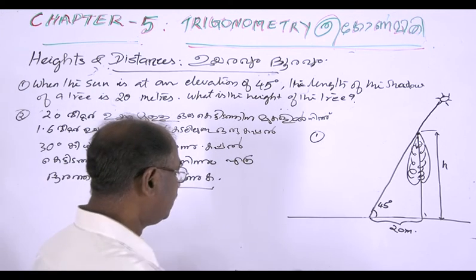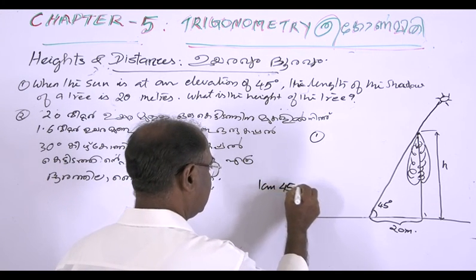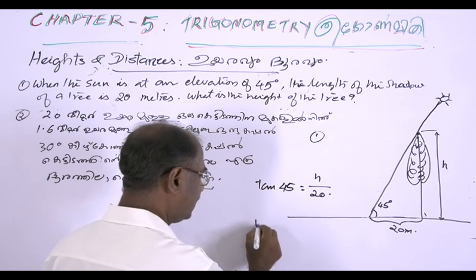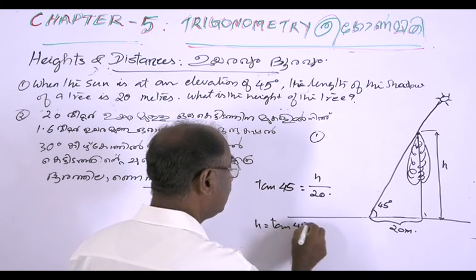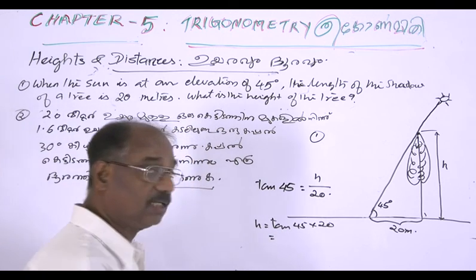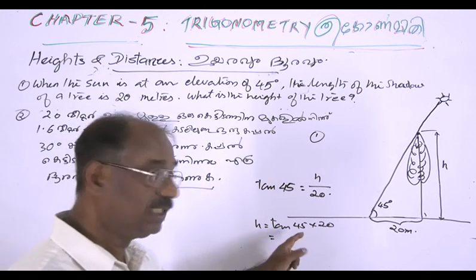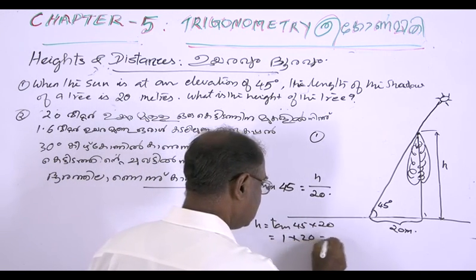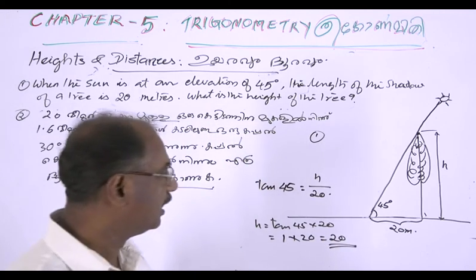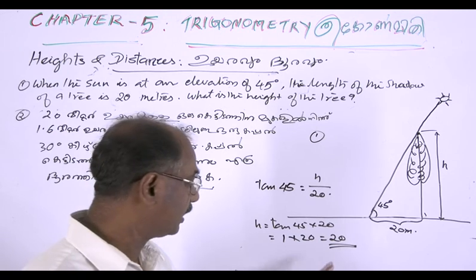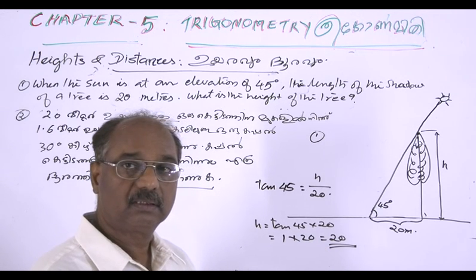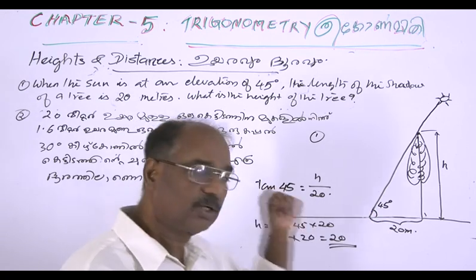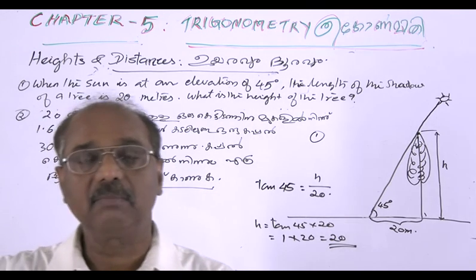So tan 45 is equal to x divided by 20. x is equal to tan 45 times 20, which is equal to 1 times 20, which is equal to 20. So the height of the tree is 20 meters.